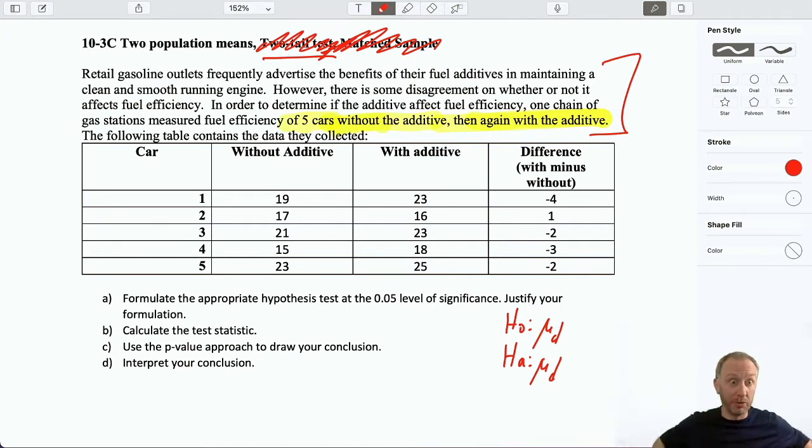One could easily argue that, you know, we want to test it for a negative impact, or maybe we want to test it for a positive impact. Perhaps either of those two options would also make sense. But when I read the problem, I'm only going to formulate my test based on what's stated in the problem, not what I think it should be, but based on what is being done and based on what is being said. So I am going to set this up as a two-tailed test to see whether it has any impact at all on fuel efficiency.